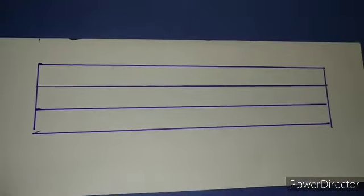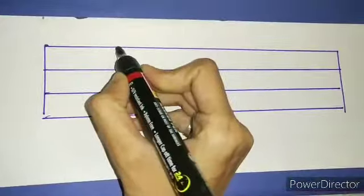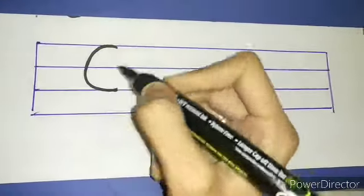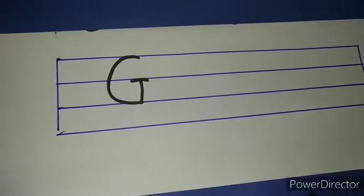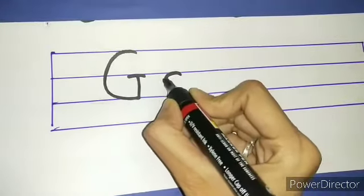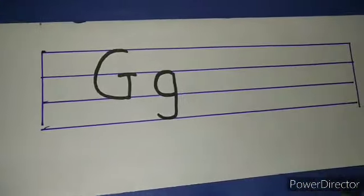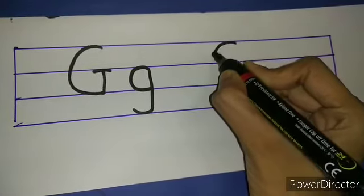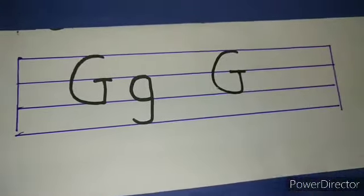Now let us write sound G. First, we will be writing uppercase G. Make a right open curve. Go up. Sleeping line makes G. Now let us make lowercase g. Make a right open curve. From up, come down. Take a turn. Makes g.